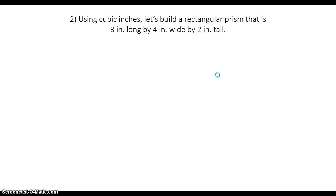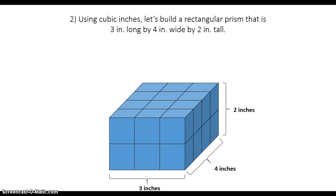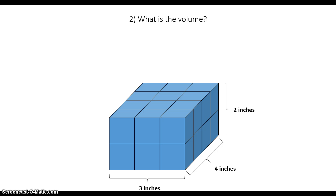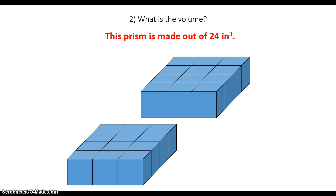Using cubic inches, let's build a rectangular prism that is three inches long by four inches wide by two inches tall. Take a second and see if you can find the volume of this rectangular prism in the work section of your WSQ. If you work this out, you should have done three times four times two. Three times four is 12, and twelve times two is 24 inches cubed. So the volume is 24 inches cubed — this prism is made out of 24 unit cubes, with 12 in the first layer and 12 in the second layer.